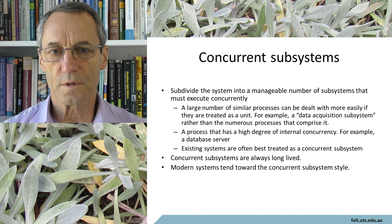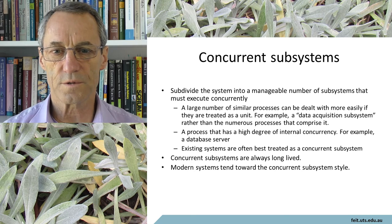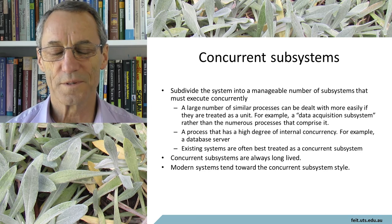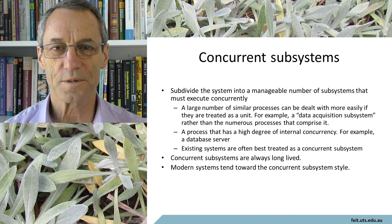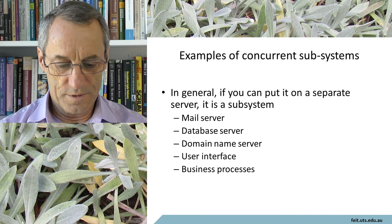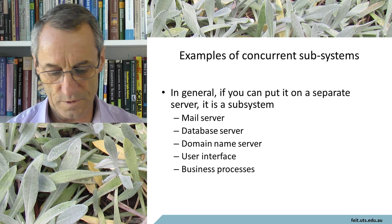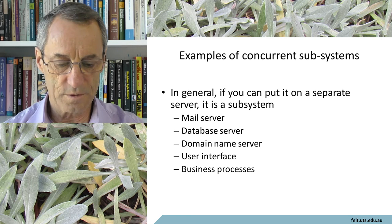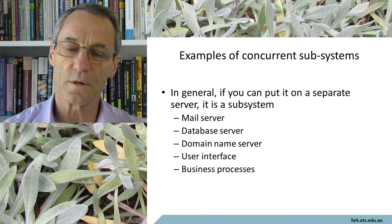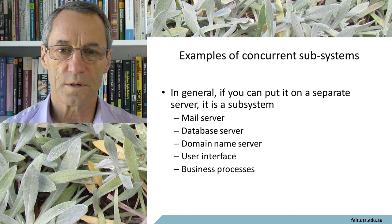This is probably because servers are readily available, and particularly as you go into cloud-based computing, the idea of restricted computers or CPUs has just gone away — it's not a consideration anymore. Examples of concurrent subsystems: in general, if you can put them on a separate server, they're a subsystem. The examples are the mail server, database server, domain name server, user interface, and business processes. Usually these kinds of things do sit on separate servers and you can consider them as a separate subsystem.